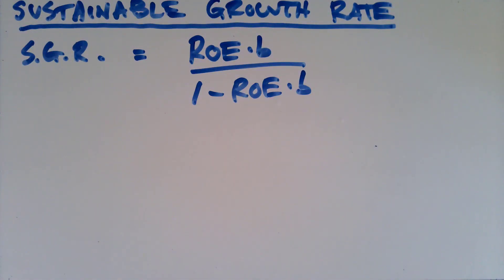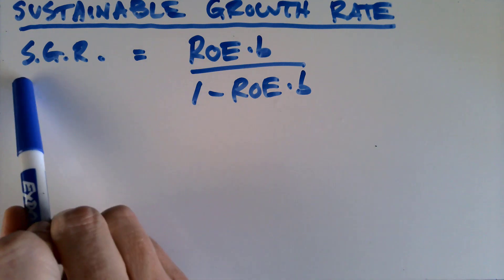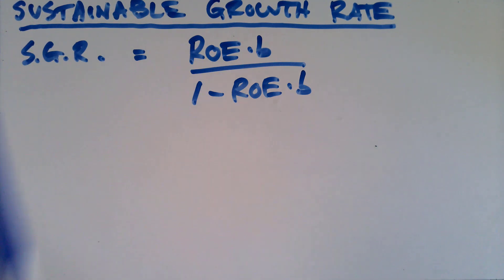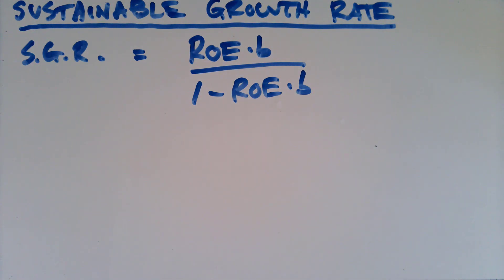Here we have the sustainable growth rate, which looks suspiciously like the internal growth rate. There are only two differences: we say sustainable growth rate instead of IGR, and instead of ROA we've got ROE. So we can treat this formula exactly the same way we treated IGR, merely swapping out ROE for ROA and SGR for IGR.